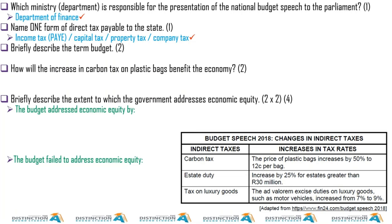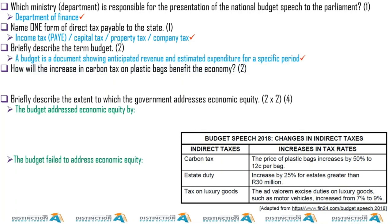When you pay personal income tax, you are making the payment directly — it's a tax on employment. But with indirect tax, you don't go to the shop to pay tax; you go there to buy something, like milk, and as you buy it, you are indirectly paying tax. That's the difference between the two.